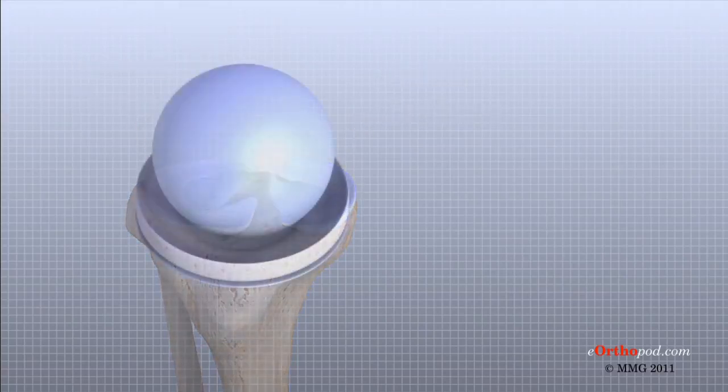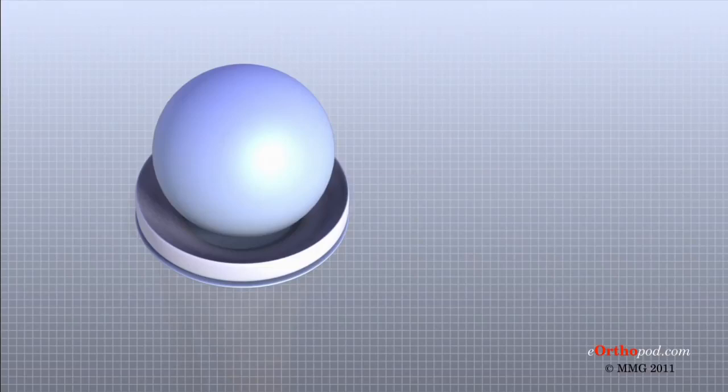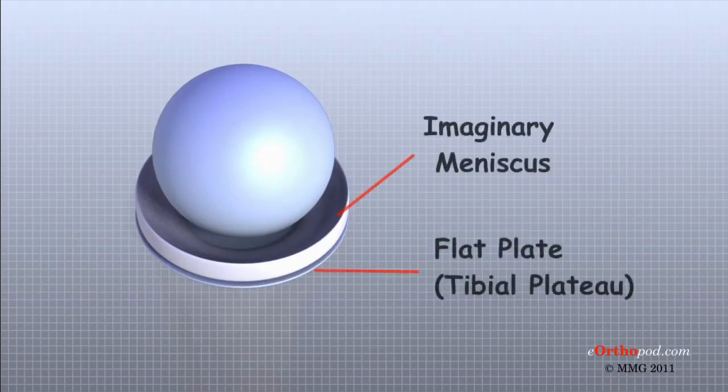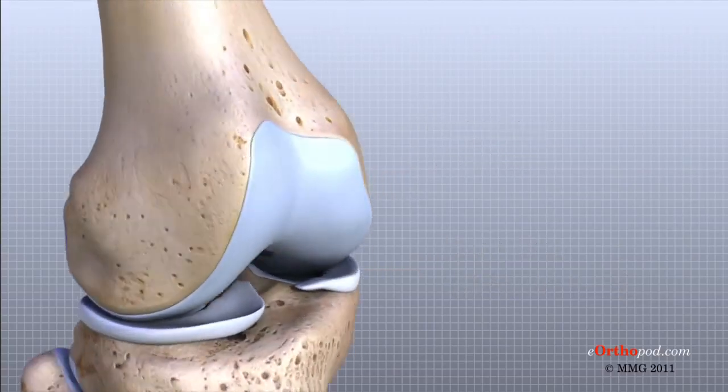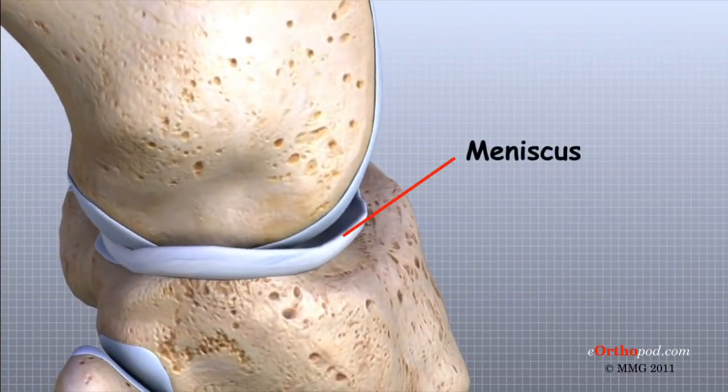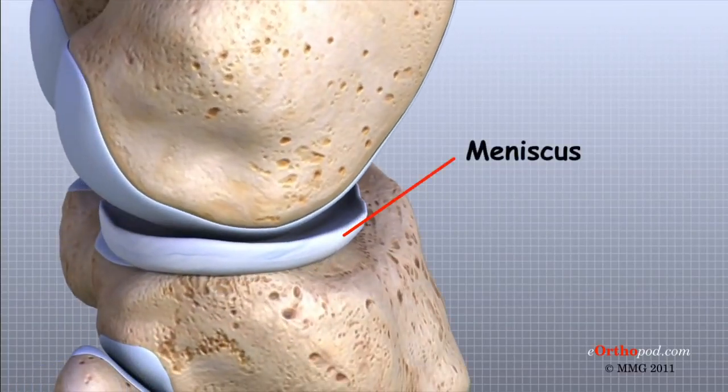Imagine the knee is a ball resting on a flat plate. The ball is the condyles of the femur and the plate is the tibial plateau. The menisci actually wrap around the round condyles to fill the space between it and the flat tibial plateau. The menisci act like a gasket, helping to distribute the weight from the femur to the tibia. Without the menisci, any weight on the femur will be concentrated to one point on the tibia. But with the menisci, weight is spread out across the tibial surface.